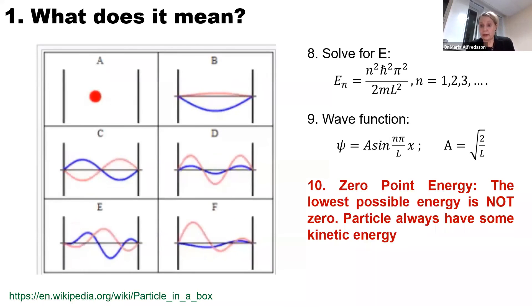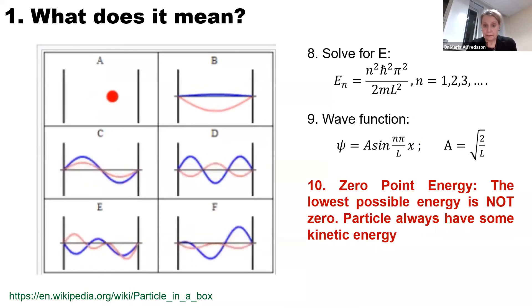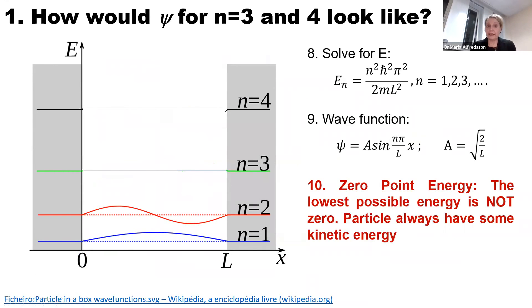What I want you to do now is try to predict how the wave function for n equals three and n equals four look like. We start by looking at n equals one. It has no crossing of this blue line, so the wave function has the same sign all the time. If we look at the blue one, it is above and below, positive and negative. That means when the wave function changes sign, we have a node. For n equals one, there is no node, zero nodes. For n equals two, we have one node.